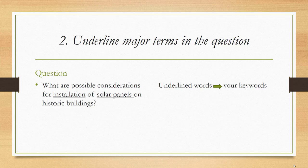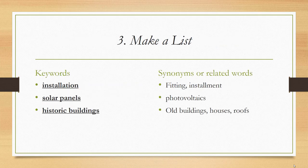Pause the video and take a moment to underline the keywords in your question. Once we have our keywords identified, the next step is to begin building a list of synonyms and related terms for each keyword. This is an important step because you might be thinking of your topic using one set of vocabulary, but those writing about it or organizing it in the database could be using a whole different set of terms. For example, in the case of solar panels, I have listed a more technical term — photovoltaics — as a synonym. I've also listed some more general terms for historic buildings in case my keyword is too specific. You can use your personal knowledge of the topic, dictionaries, a thesaurus, and your reading on the topic to begin your list.